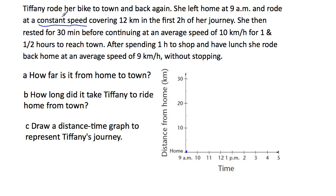She rode at a constant speed — that's a very important concept, meaning it's a straight-line graph. She covered 12 kilometers in the first two hours. Because 12 isn't marked exactly, we can only estimate: 10 is there, 15 is there, so 12 would be about here. She did it in two hours, so that's 11 o'clock — approximately that point there. We'll mark in a straight line from here to there.